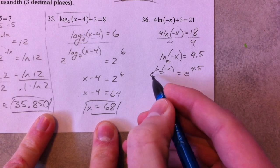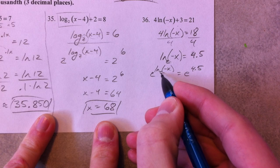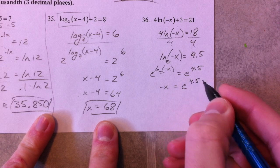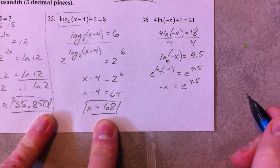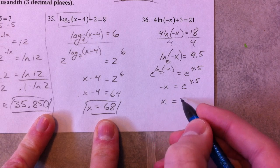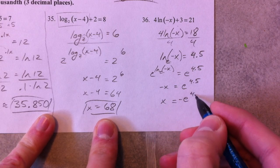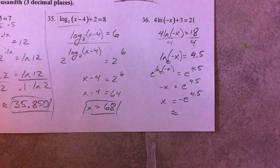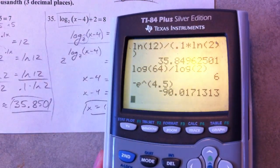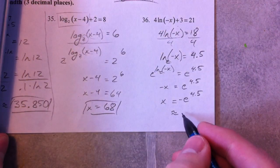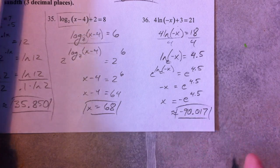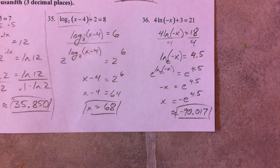What that does: e to the log base e cancels out. You just get negative x, and you get e to the 4.5. And then x is equal to the negative e to the 4.5. And approximately—negative e to the 4.5—negative 90.017. And there you have it. Logarithms.